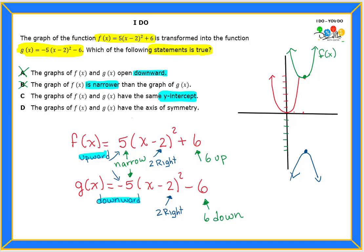So my letter C was saying they both have the same y-intercept. Is that even possible? No, right? Because one is facing up and the other one is facing downward. So the y-intercept will be very much different from each other.